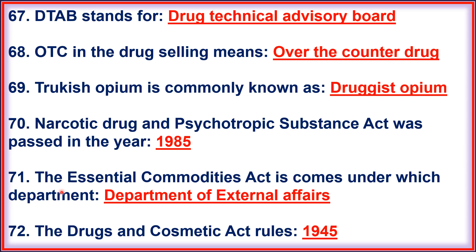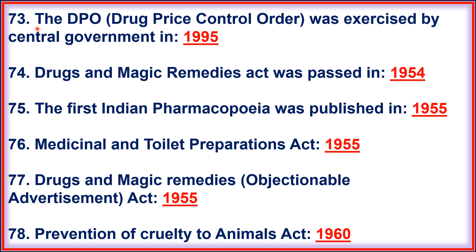71. The Essential Commodities Act comes under the Department of External Affairs. 72. The Drug and Cosmetic Act Rules, 1945. 73. The DPCO Drug Price Control Order was exercised by Central Government in 1995. 74. Drugs and Magic Remedies Act was passed in 1954. 75. The First Indian Pharmacopoeia was published in 1955.